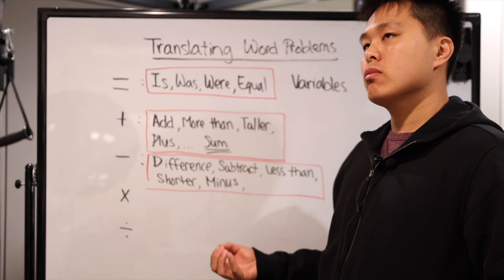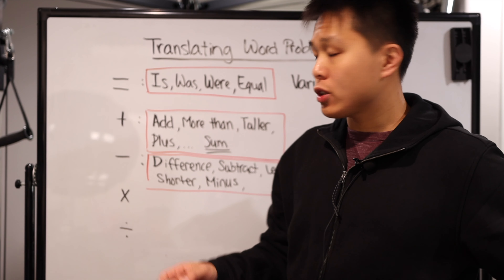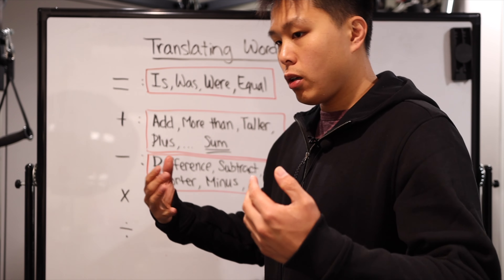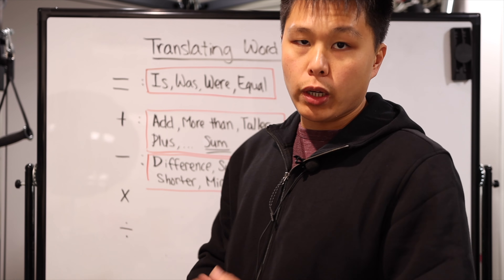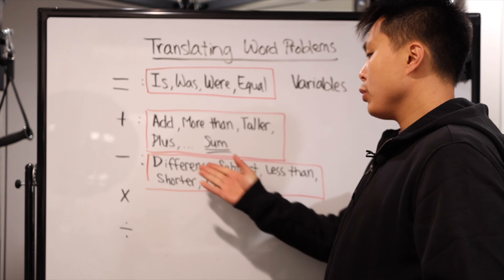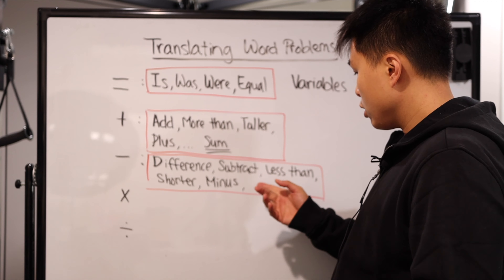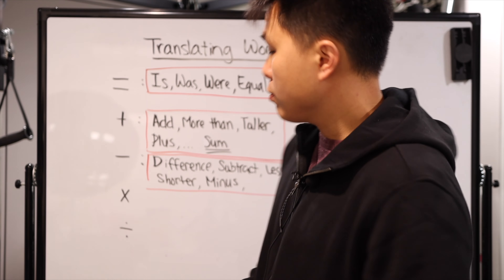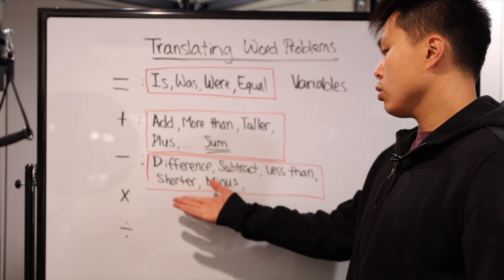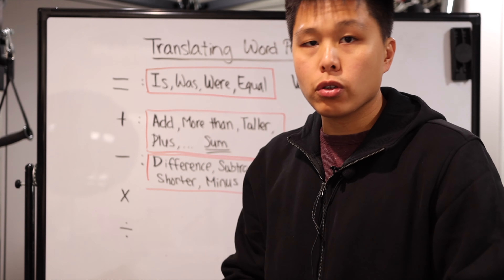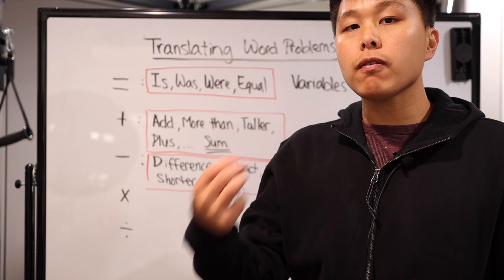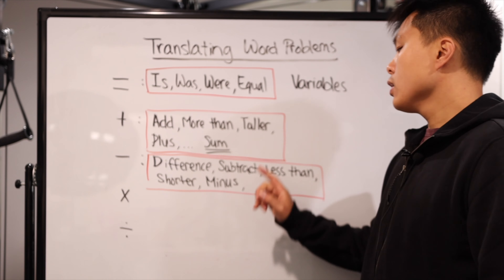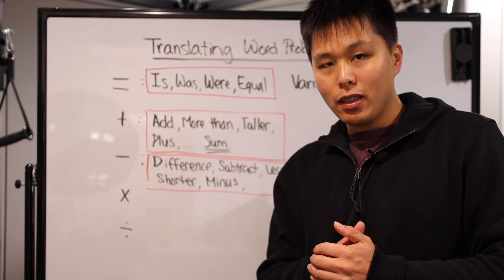The next one is subtraction. A very similar word in relation to subtraction as 'sum' is 'difference.' 'Sum' is the end product of an addition problem; 'difference' is the end product of a subtraction problem. So you have 'difference', 'subtract', 'less than', and of course special descriptions where you're taking away — it's getting lesser, smaller. It could be 'shorter', 'smaller', 'reduced' — any form where the quantity is getting reduced. And of course 'minus' is quite obvious.